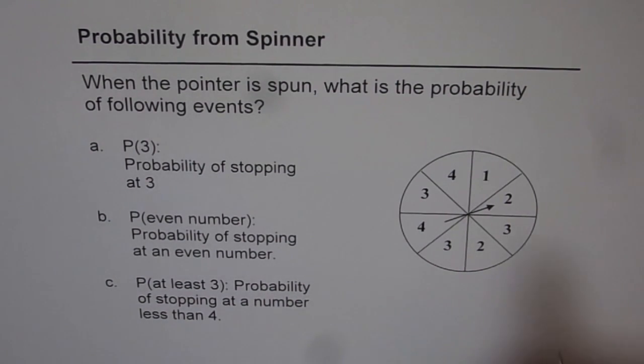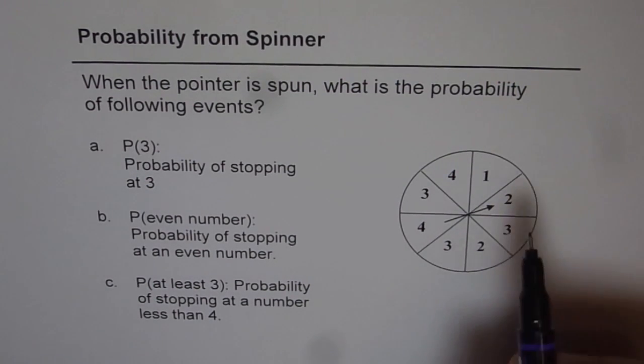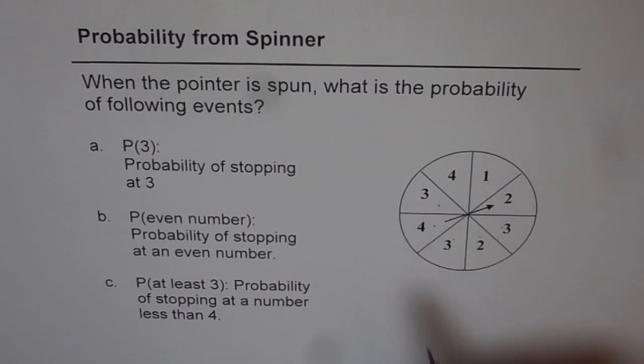Let's figure out from this spinner what are these probabilities. Now in this spinner we have divided the wheel into 8 equal parts. 1, 2, 3, 4, 5, 6, 7, 8.